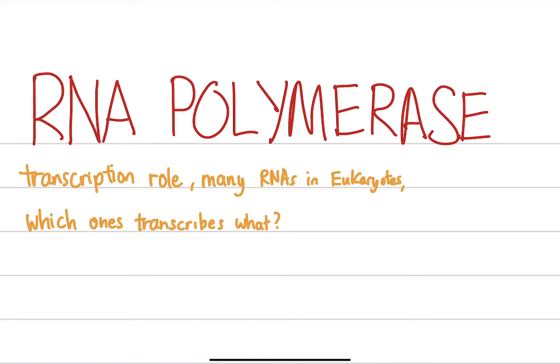As you've already noticed, transcription has a lot of different RNA polymerases which are doing different things, and they have different roles during transcription. There are many kinds of RNAs in eukaryotes. So, which ones transcribe what?